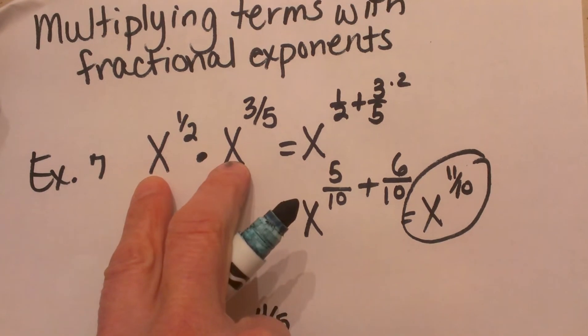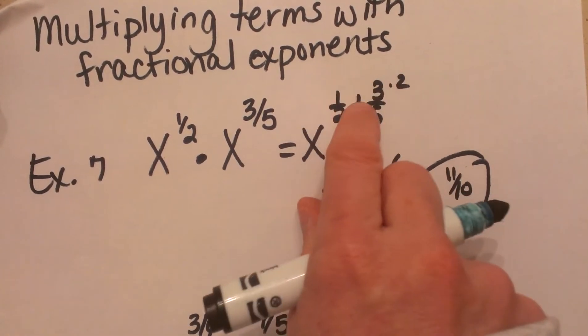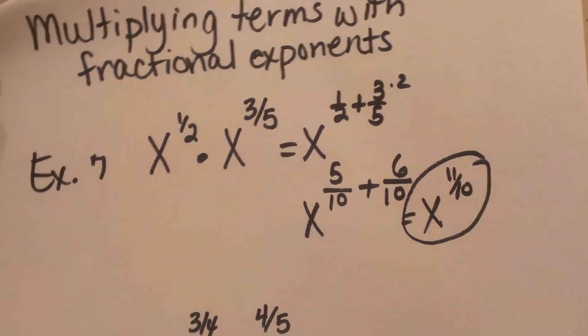So when multiplying like bases, you add the exponents, even if they're fractions, but to add the fractions, remember you need common denominators.